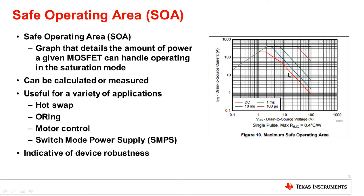Or you can derate to such an extent that you end up with lines that are far too conservative relative to what the FET can actually handle. TI has acquired a very powerful SOA tester — all devices released since 2014 are measured, and we are going back to retroactively measure devices released prior. Competitors' older data sheets almost always were calculated; newer ones were measured, which you can usually tell by some kinks and caveats.